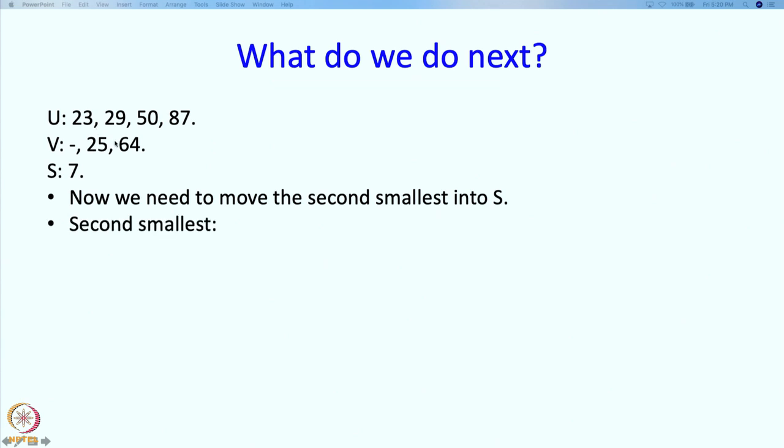So how do we get that? The second smallest is the smallest in UV after the smallest has moved out, so which is exactly this position over here. And to get that, we simply have to ask what is the smaller among what is at the front of U and V.